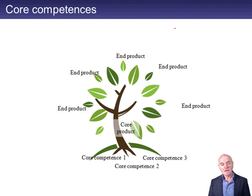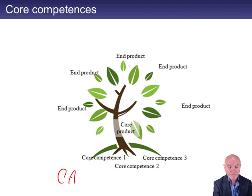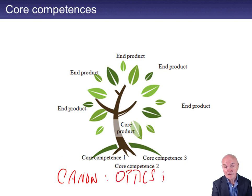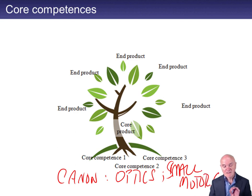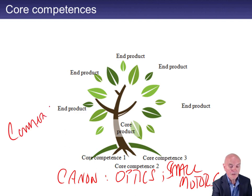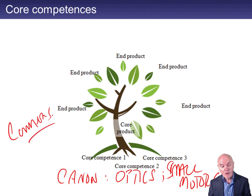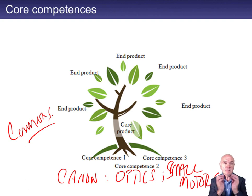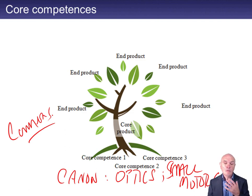So Prahalad and Hamel were keen on people looking at their core competences and asking: what are all the different industries where I can apply these? Take Canon — Canon is particularly good at optics and also, perhaps surprisingly, very good at very small, precise electric motors. The first place it used those was cameras: very good optics, and of course when you get automatic focus, the lens moves a tiny bit very quickly and accurately. Small bits of engineering were part and parcel of what a camera company did.